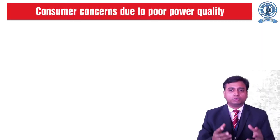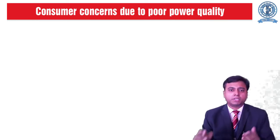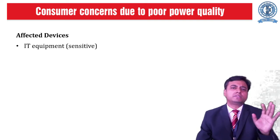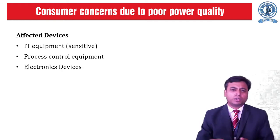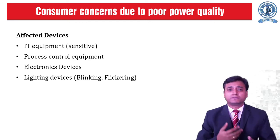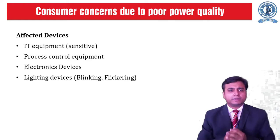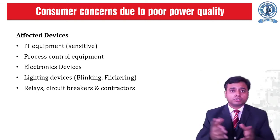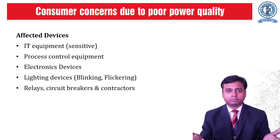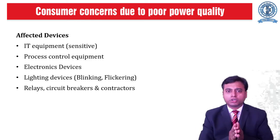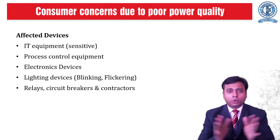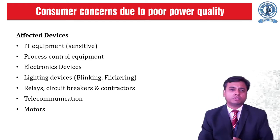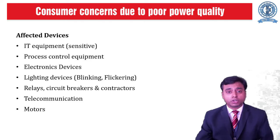What are the consumer concerns due to poor power quality? I have listed some of them. Many devices are affected — IT devices which are very sensitive to voltage fluctuations, process control equipment mostly used in industry, electronic devices used in commercial as well as household activities. You will always find lights flickering and blinking — that is again a power quality issue. There are circuit breakers in transmission and distribution that trip without any reason due to power quality problems. Problems also arise in telecommunication and the functioning of motors.